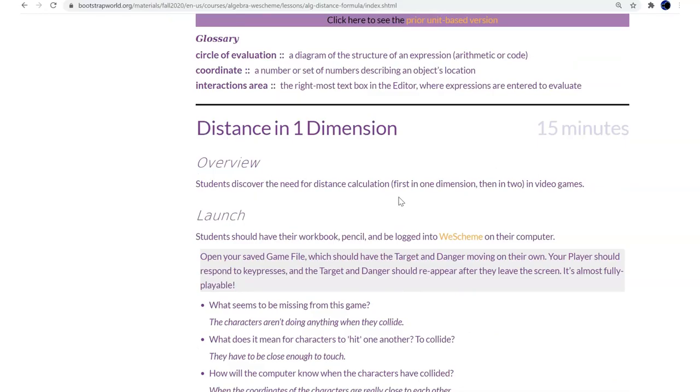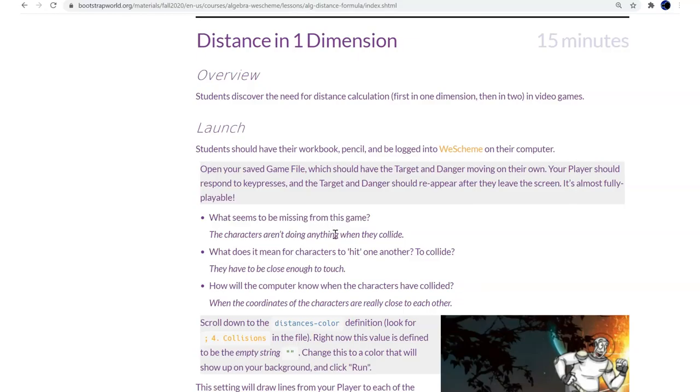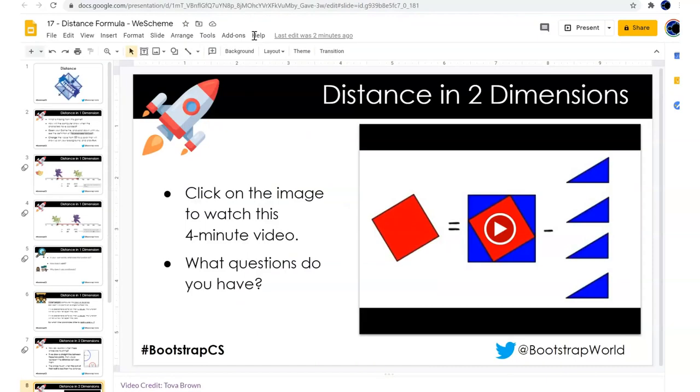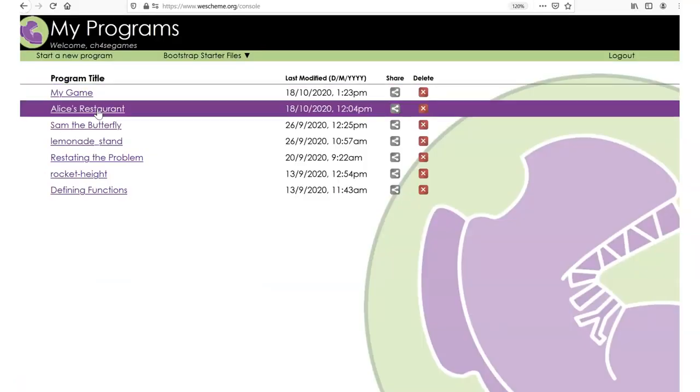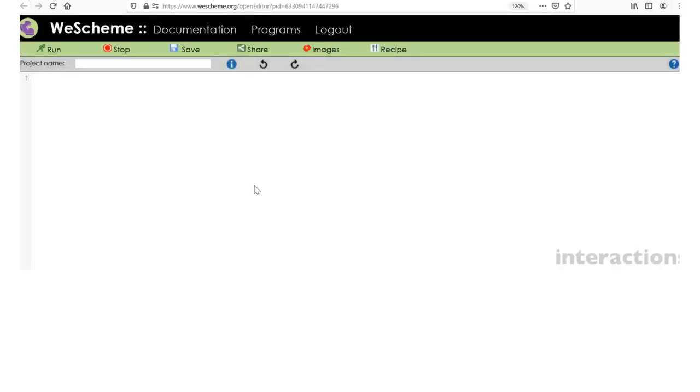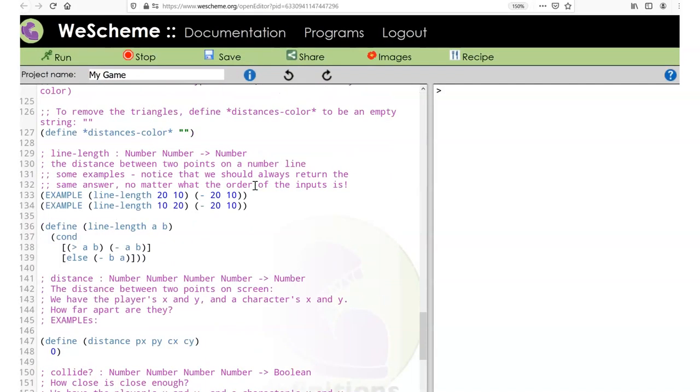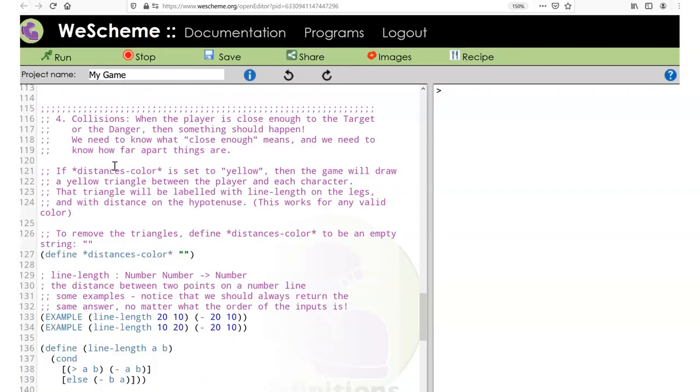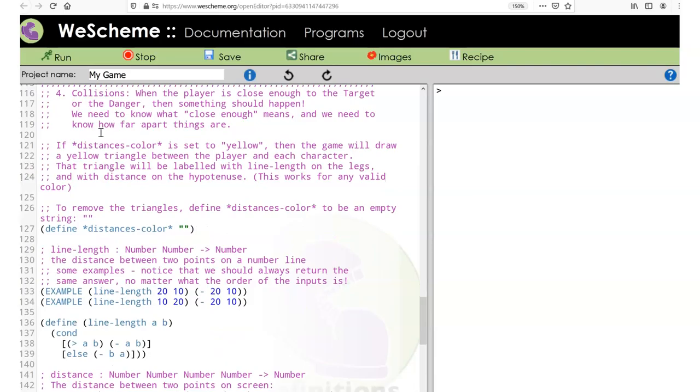Discover the need for distance calculation, first in one dimension then two. What does it mean for hit color, distance is color? I'm gonna look at that in WeScheme, my game. For collisions, when the players close enough to target, close enough means distance is color set to yellow, then the game will draw a yellow triangle play the player again.